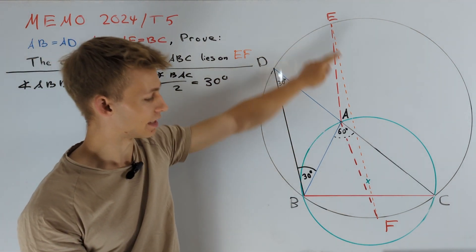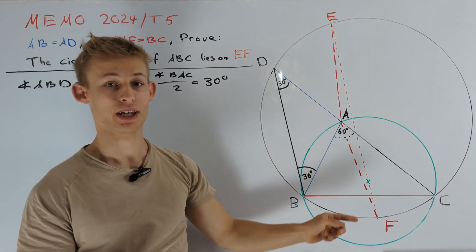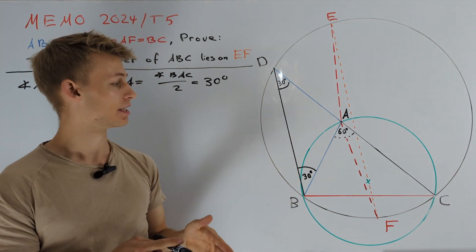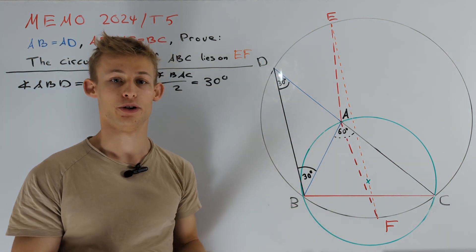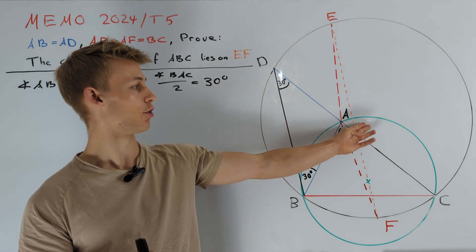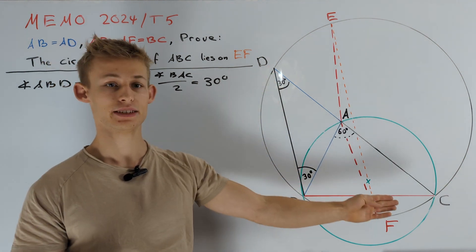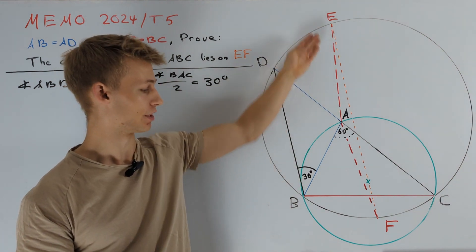Moreover, the points E and F both lie on the circumcircle of triangle DBC and therefore we know as well that the perpendicular bisector of EF passes through the midpoint of this circle. This motivates us to draw in a circumcenter O of triangle DBC and connect A with O to be the perpendicular bisector of E and F.